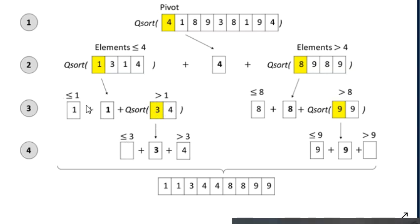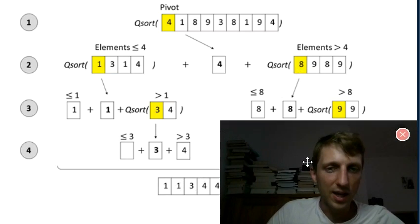The sorted list [3, 4] is passed up as the return value. We then get [1] + [1, 3, 4] from this branch. This is passed up to the calling qsort function, giving [1, 1, 3, 4] as the sorted left sublist. Appending pivot 4 and the recursively sorted right branch gives [8, 8, 9, 9]. The overall algorithm result is [1, 1, 3, 4, 4, 8, 8, 9, 9] — a fully sorted list.